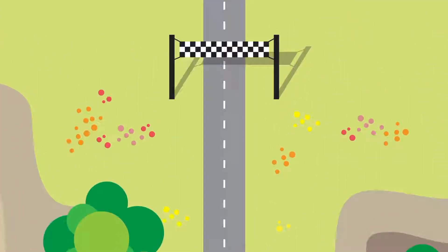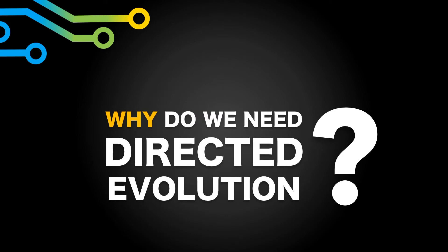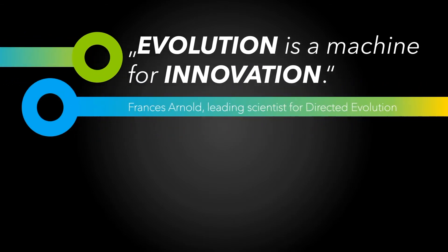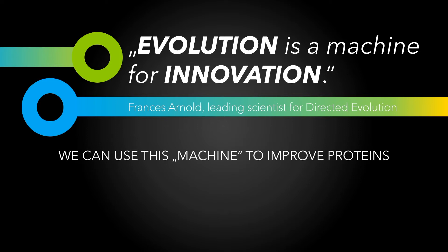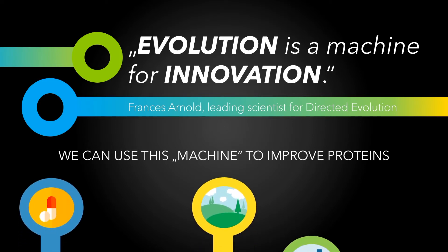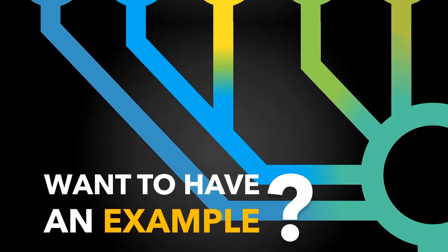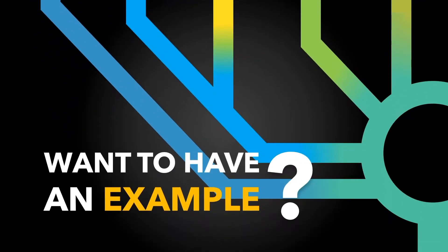But why do we need directed evolution? Evolution is a machine for innovation. By speeding it up and directing the evolutionary process, we can use this machine to improve proteins that are relevant for environmental protection, drug development, industry, energy supply and food production. Harnessing this immense power of evolution is highly promising.